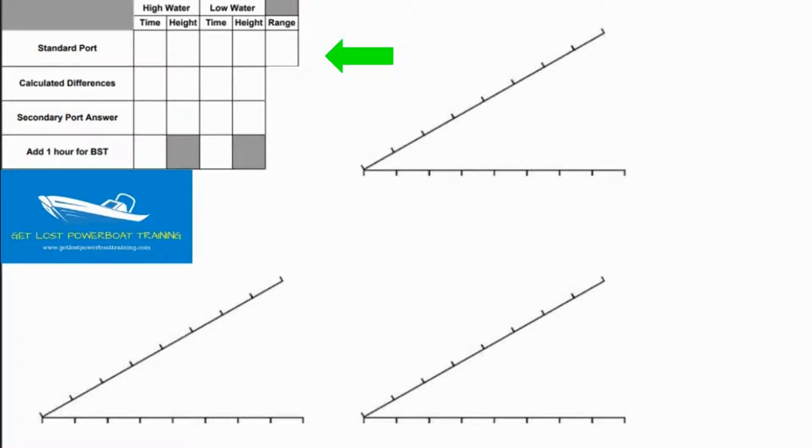The other three parts of the template are the crocodile teeth or the triangles and this is where we're going to work out the answers that we need for the secondary ports.